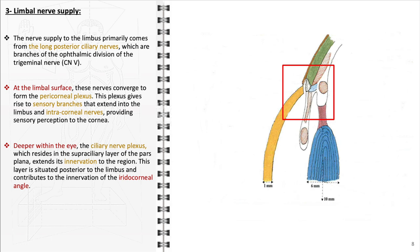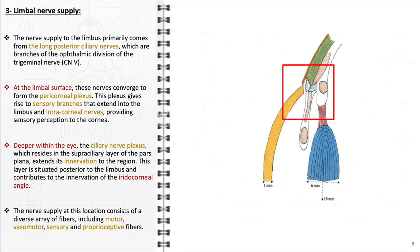The iridocorneal angle receives sensory innervation from these nerves. The nerves supplying the limbus and surrounding areas are composed of various types of fibers: motor fibers, though limited in this region, involved in controlling small muscle movements in the eye; vasomotor fibers, which regulate blood flow by controlling the dilation and constriction of blood vessels; sensory fibers, which are predominant and essential for corneal sensitivity, responding to stimuli like foreign objects, air, and temperature changes; and proprioceptive fibers, which contribute to the sense of position and movement of the eye.